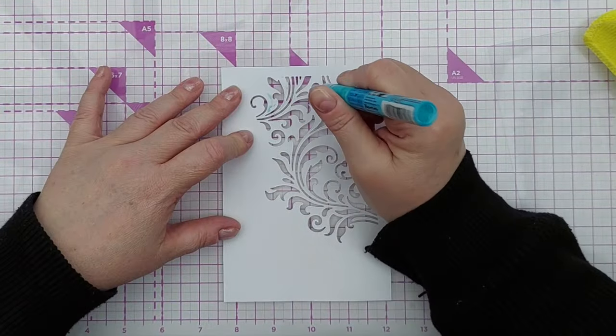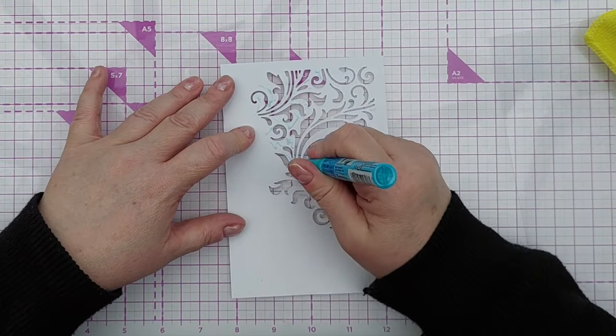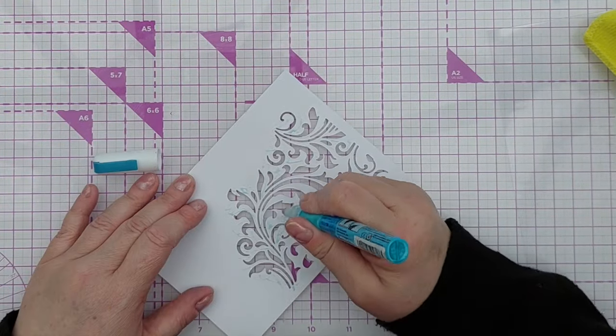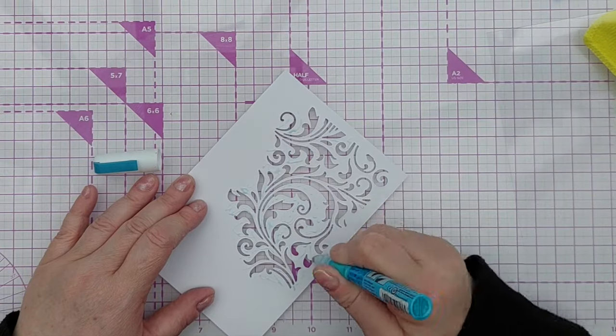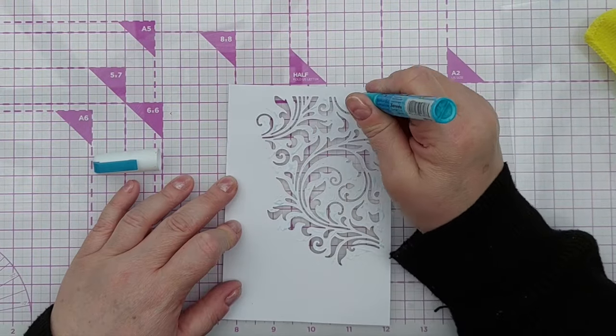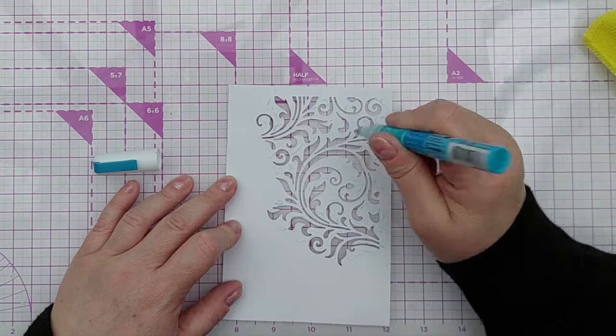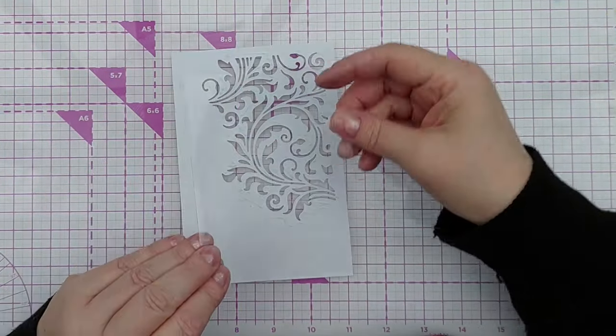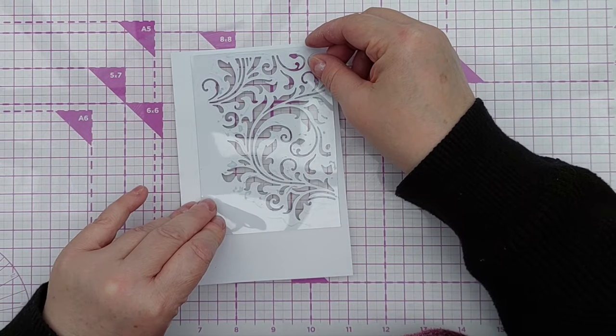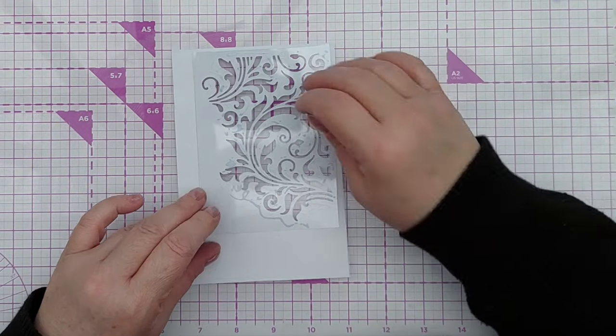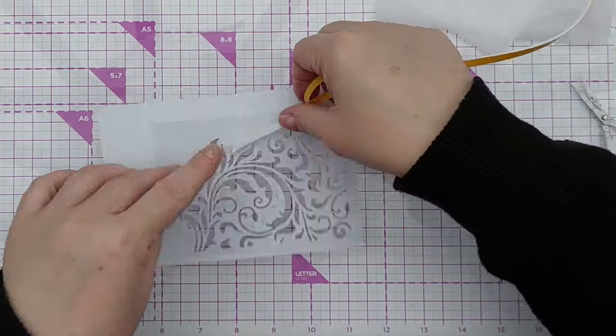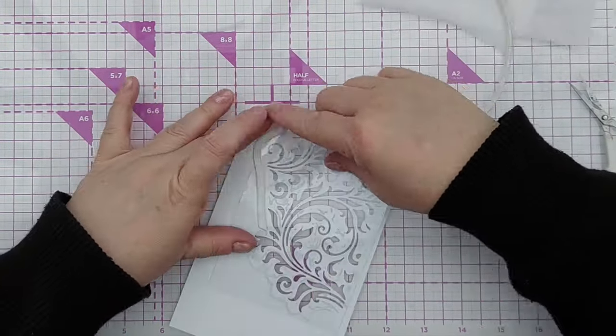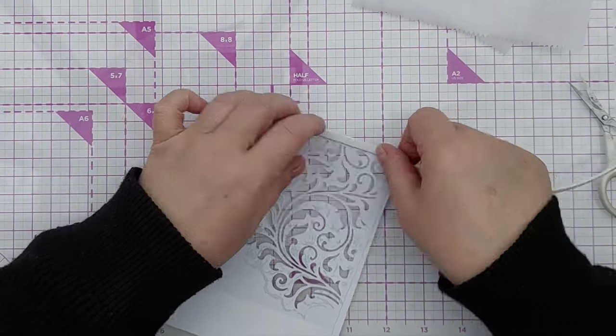At this point in the process, I decided I was going to make a shaker card because I thought this particular aperture would look lovely with some glitter behind it. So I took a Zig two-way glue pen and added the glue onto all the fiddly bits of the panel. I waited for that to dry a little bit for the glue to go clear so it was tacky. And then I added a little sheet of acetate on top and because the glue was tacky, the acetate stuck to it right away.